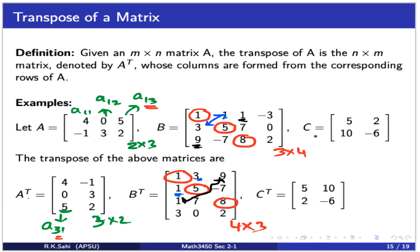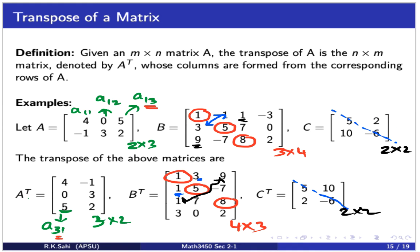Matrix C is a 2 by 2 matrix, so its transpose is also 2 by 2. The diagonal elements 5 and minus 6 do not change. The off-diagonal elements flip along the diagonal: 2 goes down and 10 goes in place of 2 in the C transpose.